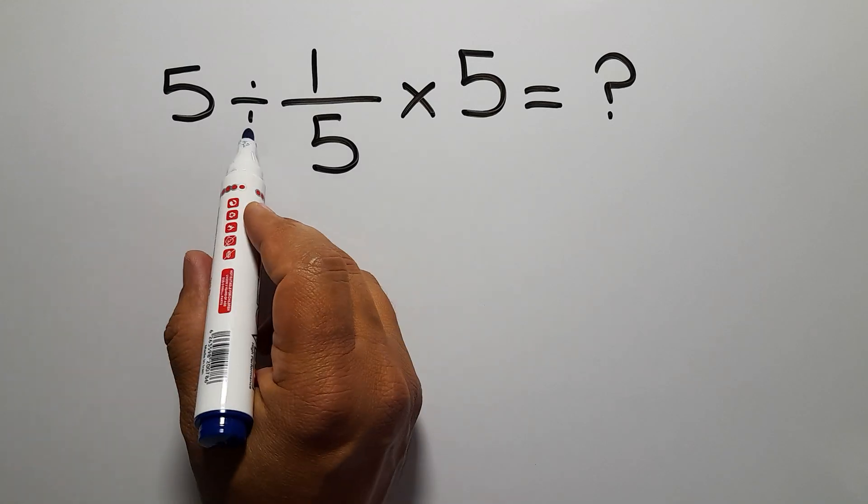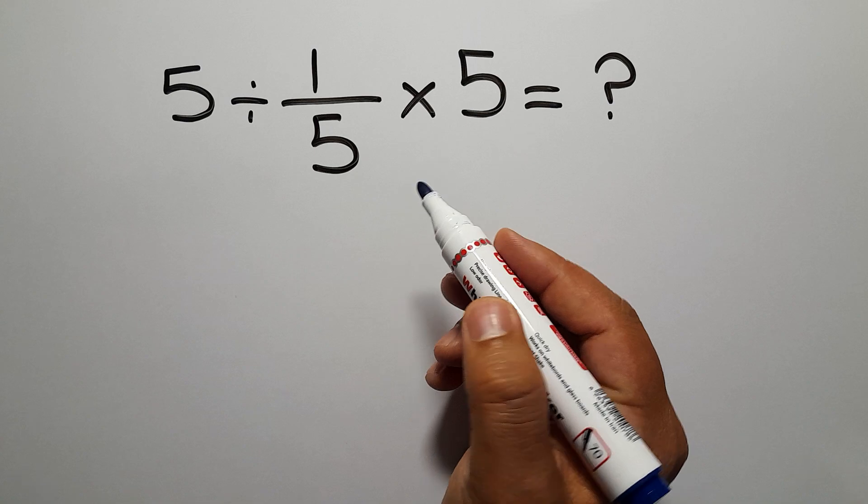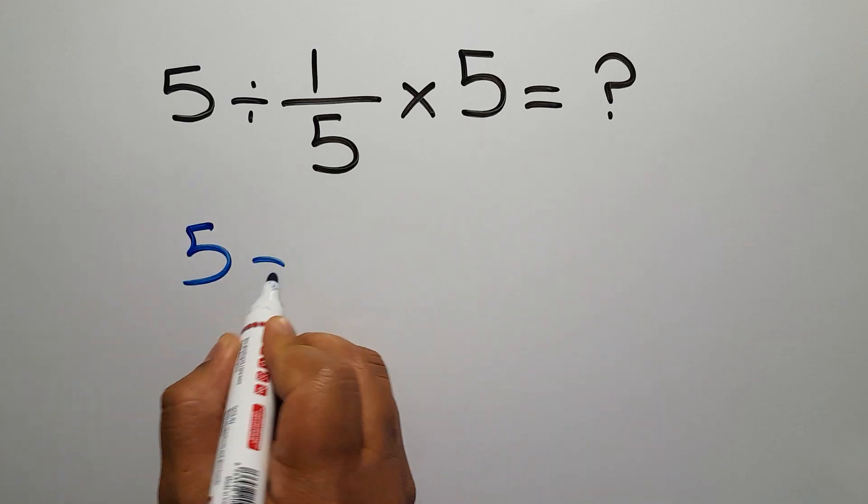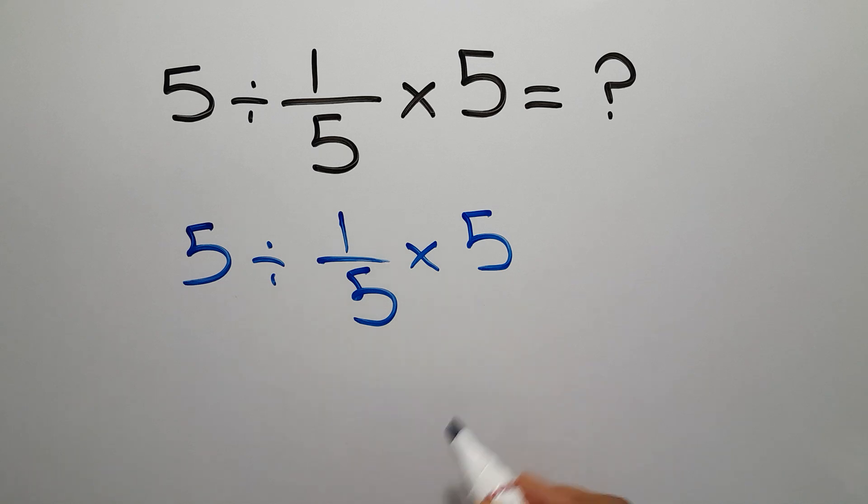5 divided by 1 over 5, then times 5. Let's solve this problem.